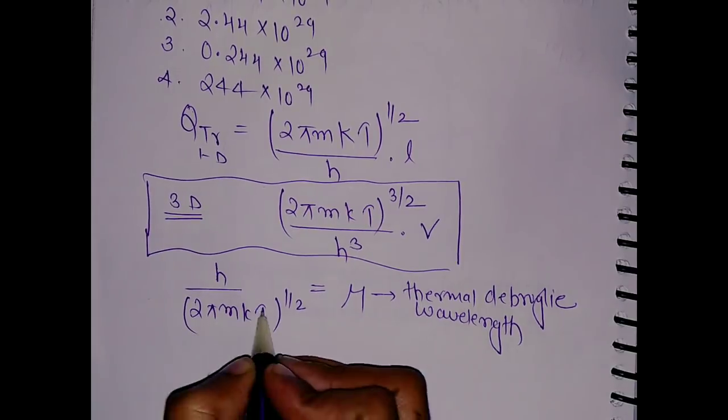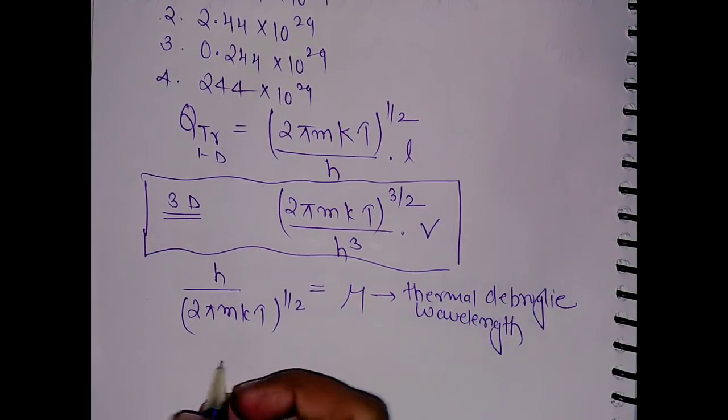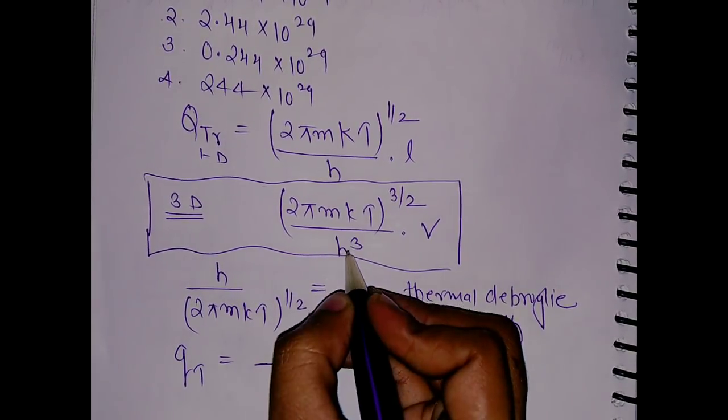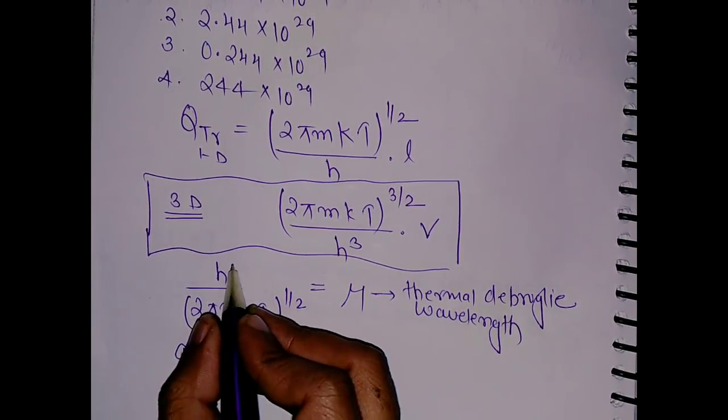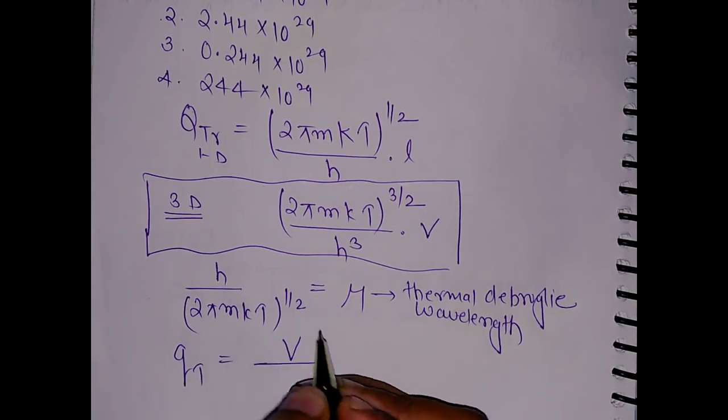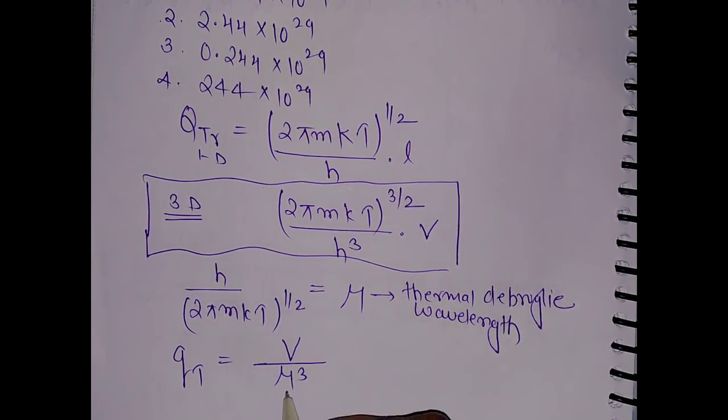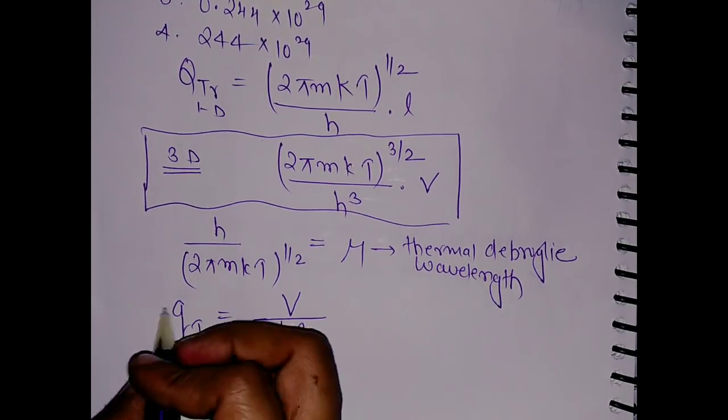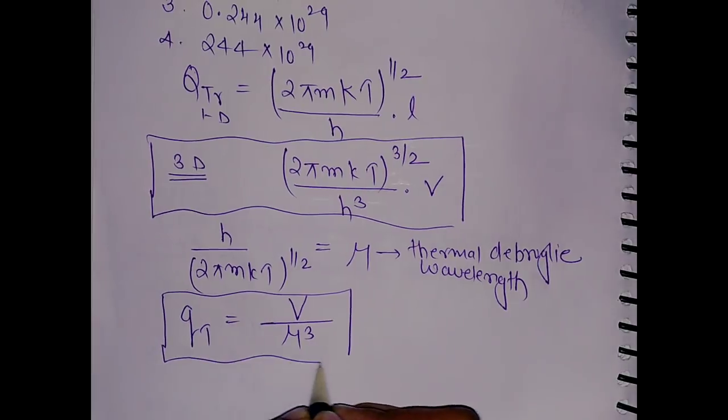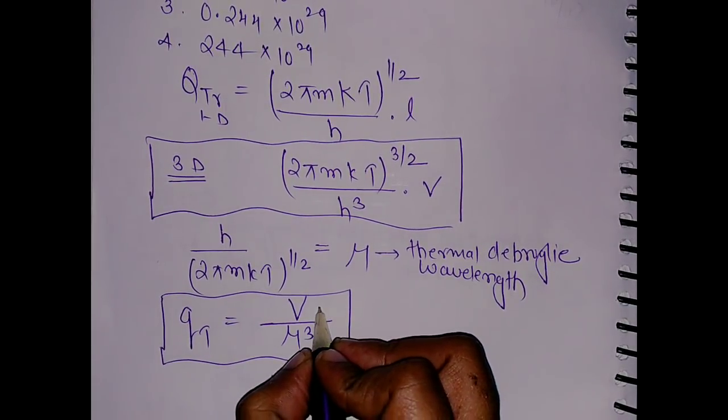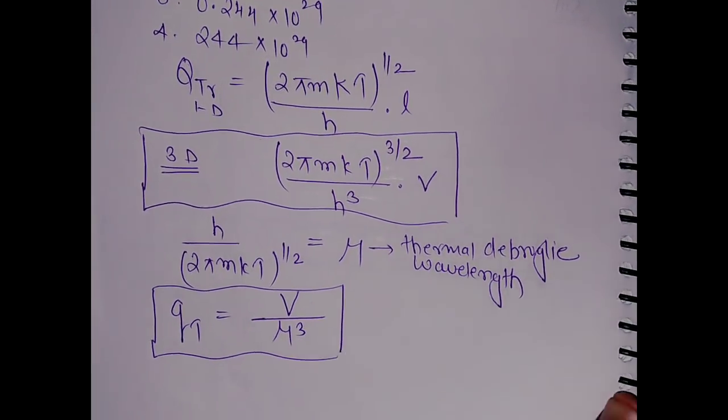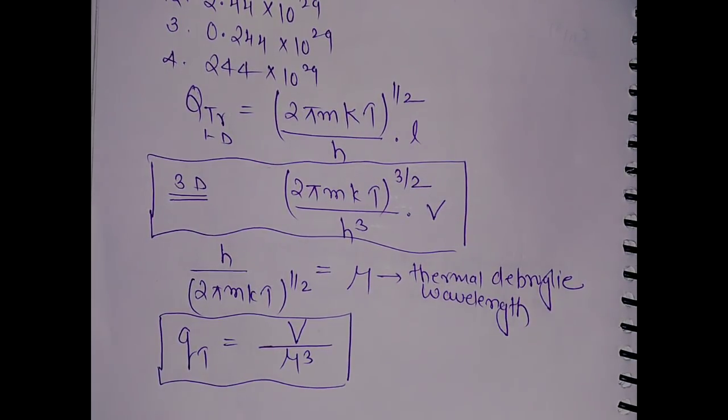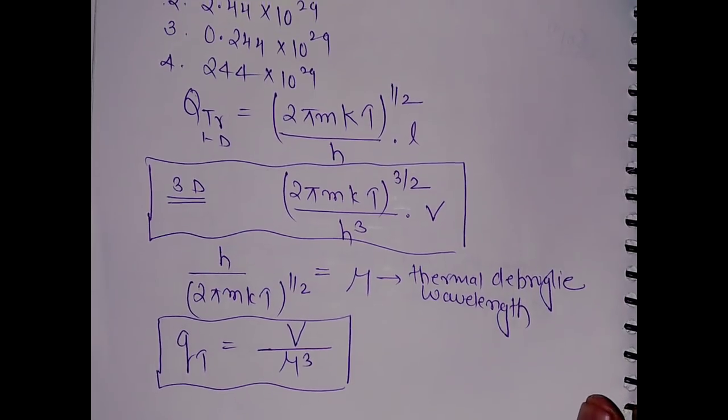Substitute this value in the expression. We get the translational function as V/λ³, where λ is the cube of the thermal de Broglie wavelength. The volume and wavelength have been given in the question, so we calculate with unit conversion.